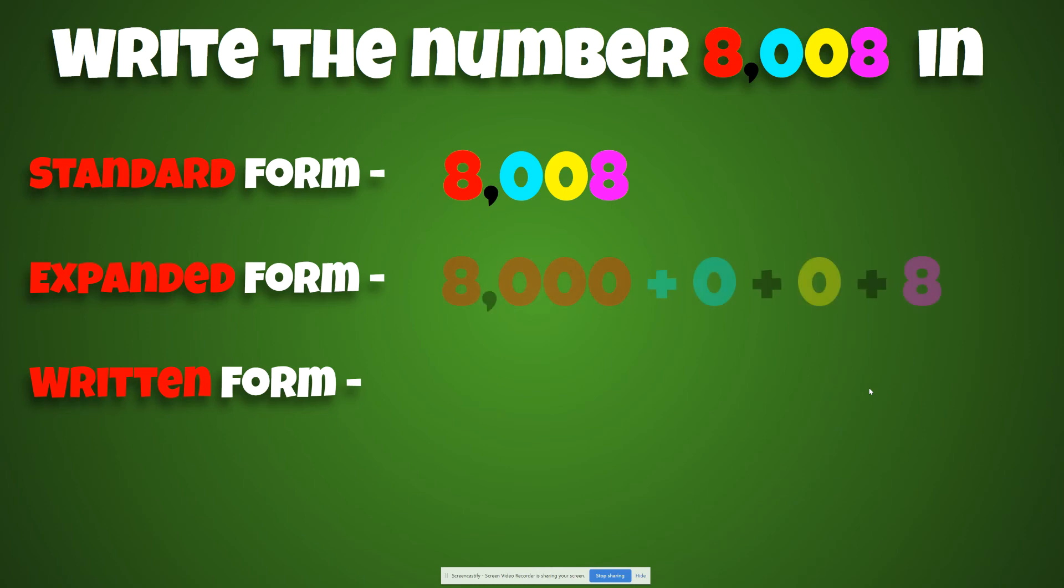Expanded form is where we explode the number. And it's 8,000 and then plus 0, plus 0, plus 8. Because remember, your teacher told you those 0s mean placeholders. Good job.